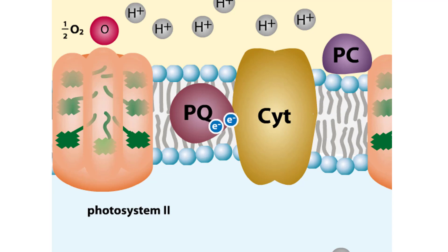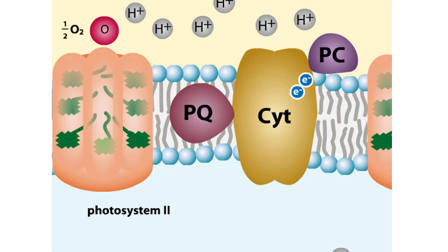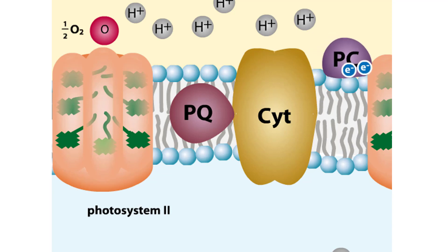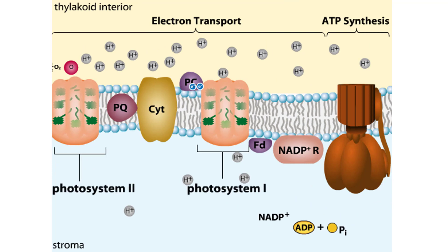Electrons move from plastoquinone, which becomes oxidized, to cytochrome, which becomes reduced. The redox reactions continue as cytochrome passes electrons to plastocyanin. From plastocyanin, the electrons will replenish electrons that are lost from a chlorophyll molecule in photosystem I.